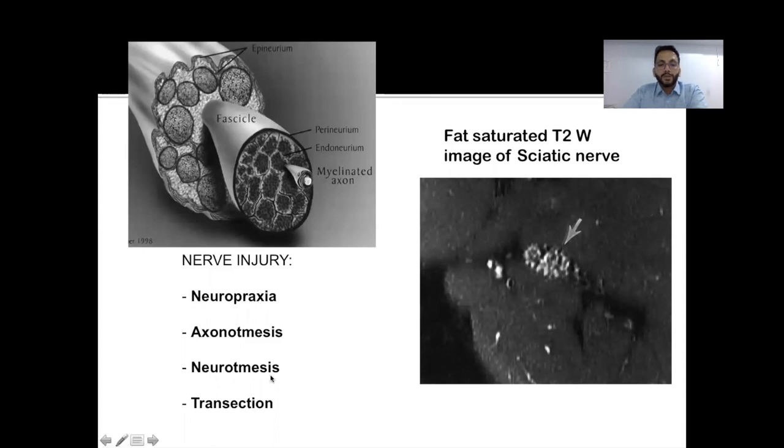Moving on to the next type, the neurotmesis. Now, this is a slightly severe form of injury in which there is partial nerve tear. So there will be disruption of the axons as well as some of the nerve fascicles. There will be breach in the endoneurium as well as the perineurium, but the epineurium will be intact. So the nerve structure is generally maintained. These are patients who will need surgery many a times, they might have some permanent neuro deficit and the sequelae of Wallerian degeneration.